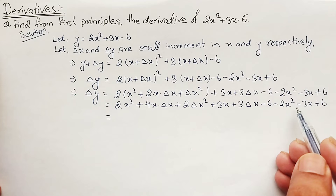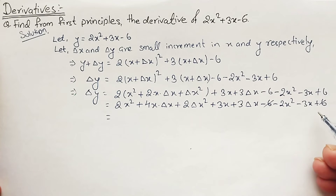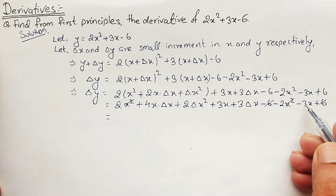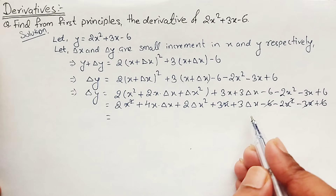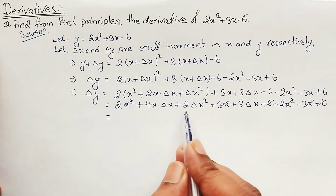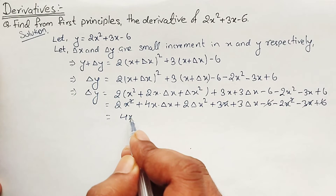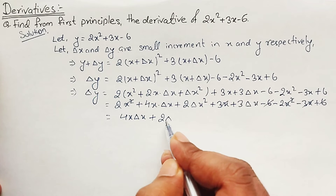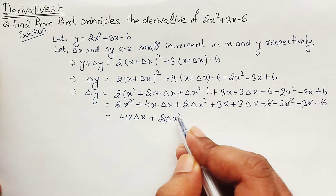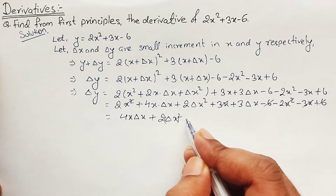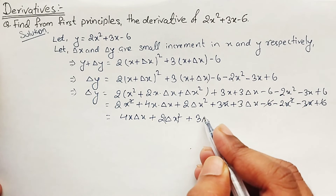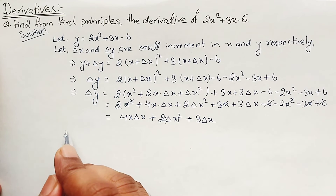Now we cancel out terms: 6 and minus 6 cancel, 2x squared and minus 2x squared cancel, and 3x and minus 3x cancel. So we are left with: 4x·Delta X plus 2·Delta X squared plus 3·Delta X.